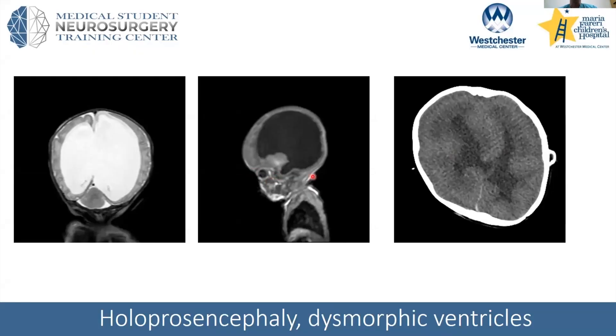This is on a continuum, and this is just an example of some dysmorphic ventricles — they look very abnormal. You can tell this patient has a shunt; you can see the valve here on the side.